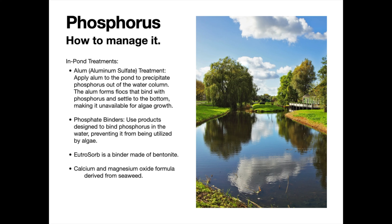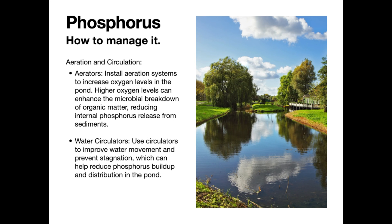Another tool to consider is adding or increasing aeration. My preference is for subsurface bottom aeration, because what you're doing is increasing circulation throughout the pond — very beneficial for many things — but the key goal is to increase oxygen at the bottom of the pond near the substrate. As you do that, you increase the binding capability of phosphorus, sequestering it down there due to higher oxygen. Conversely, low oxygen will release more phosphorus from the sediment. Water circulators are also good for improving movement, preventing stagnation, and may help prevent the buildup of phosphorus at the bottom.